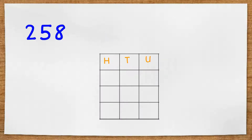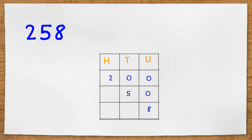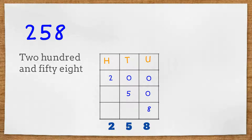I've got here a three-digit number: two five eight. How could I read this number? Three digits tells me hundreds, tens and units. So I'm going to have two hundreds, five tens and eight units, which together make 258.